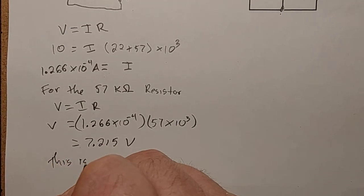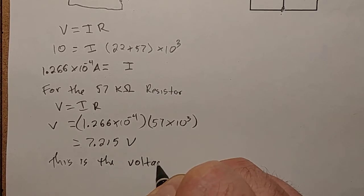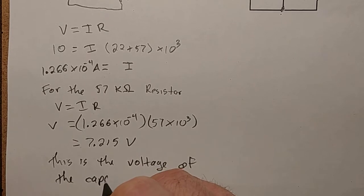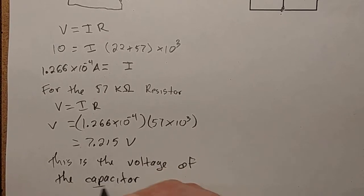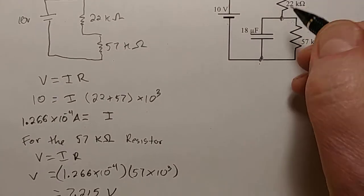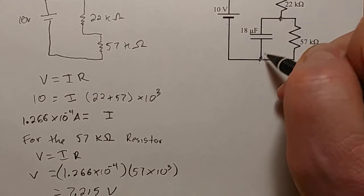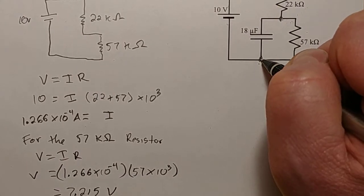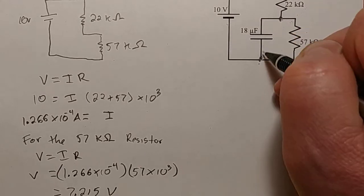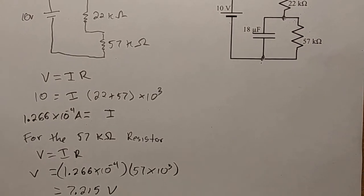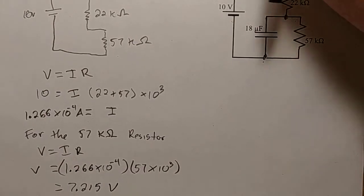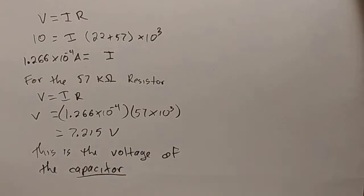This is the voltage of the capacitor. Remember, if it's 7.215 volts from here to here as you go across the 57 kilo ohm resistor, it has to be the same if you go this route. The difference in potential from one place to another has to be the same, no matter which path you take.